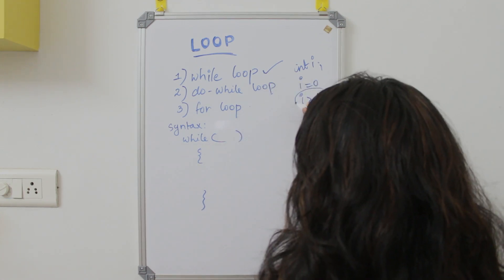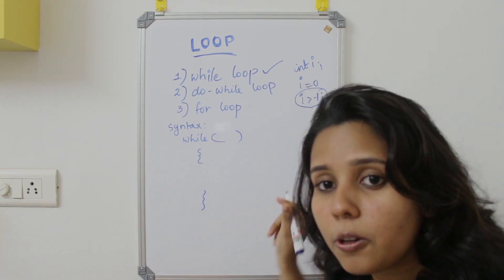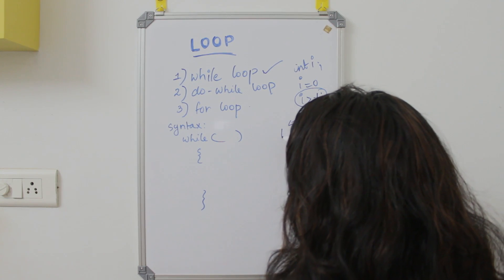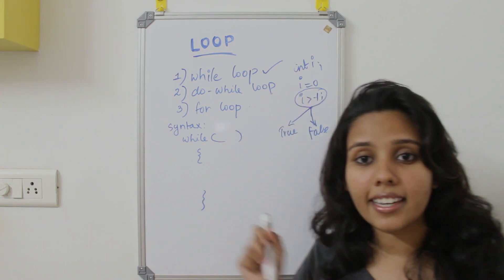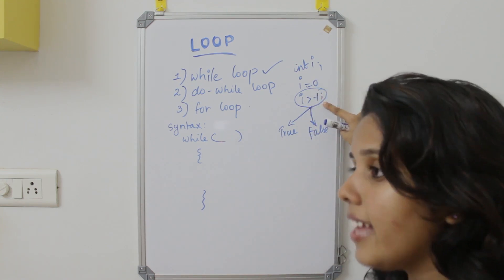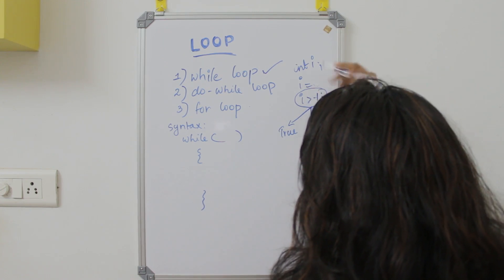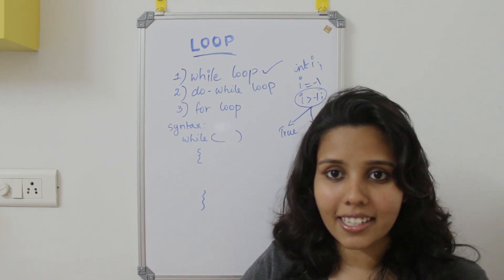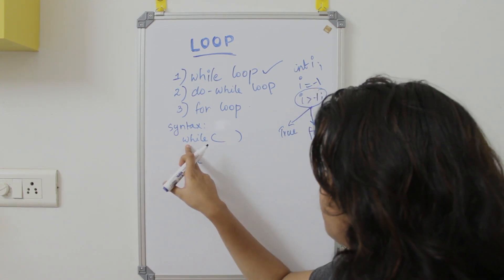Now let me show you. Here we have a statement in C programming. We have two options: either true or false. If we check i greater than minus 1, with i equals 0, the answer will be true. That is why i minus 1 is false. Now we will relate to the while loop — the while loop will have a condition.